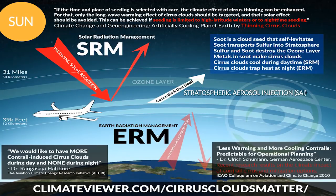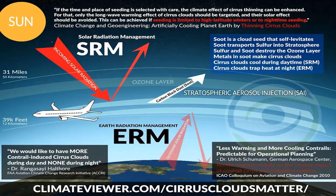Soot is a cloud seed that self-levitates. Soot transports sulfur into the stratosphere. Sulfur and soot destroy the ozone layer. Metals in soot make cirrus clouds. Cirrus clouds cool during the daytime — SRM — and cirrus clouds trap heat at night — ERM, Earth Radiation Management. What should normally happen is sunlight comes in, heats the ground, and at night that long-wave radiation goes back to space. But it's not, because planes are making clouds that trap that heat.